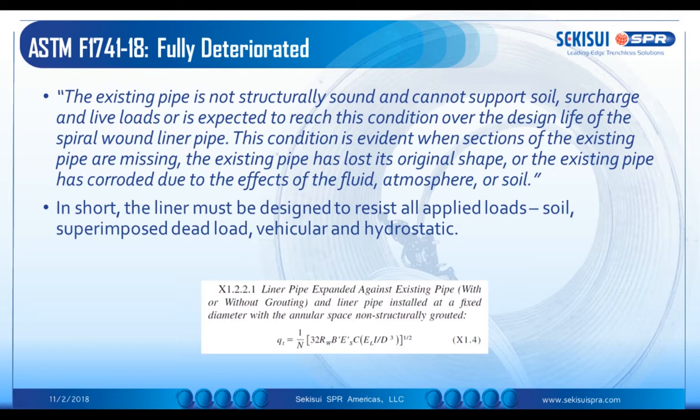On ASTM F1741, the fully deteriorated pipe condition — which is frankly what we do most of our designs in accordance with — is where the existing pipe is not structurally sound and cannot support the soil, surcharge, and live loads, or is expected to reach this condition over the design life of the spiral wound liner pipe. This condition is evident when sections of the existing pipe are missing, the pipe has lost its original shape, or has corroded due to the effects of fluid, atmosphere, or soil. In short, the liner must be designed to resist all applied loads: soil, superimposed dead load, vehicle loads, and hydrostatic loads. You can see an example of the calculation from the annex within the ASTM.